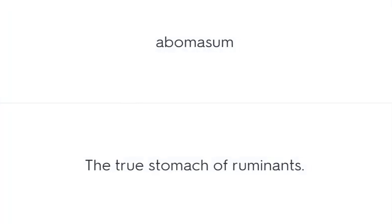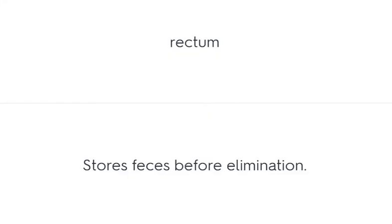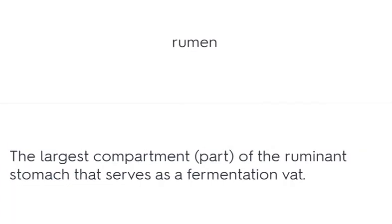Abomasum – the true stomach of ruminants. Rectum – stores feces before elimination. Rumen – the largest compartment of the ruminant stomach that serves as a fermentation vat.